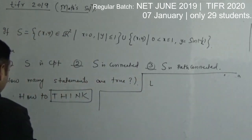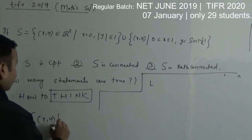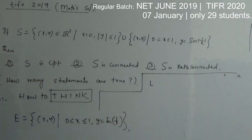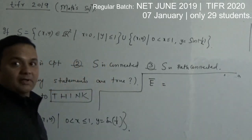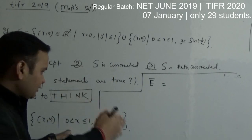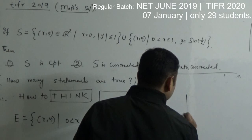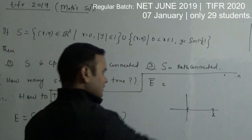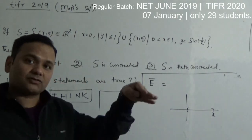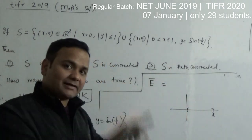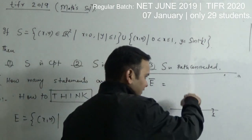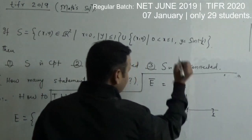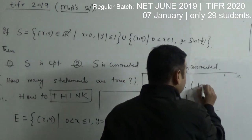Let's consider the set E: all those (x, y) where y is equal to sin(1/x). What is the E-closure? The difference is x goes from 0 to 1. As x approaches 0, y = sin(1/x), and we know the range is minus 1 to 1. In the region near 0, the graph oscillates between minus 1 and plus 1 very frequently. So the E-closure is nothing but this closed set including the segment {0} × [−1, 1].